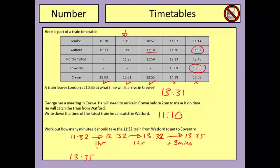So in total I've added on two hours and three minutes. Now I need to show this in terms of minutes rather than hours and minutes. One hour is 60 minutes, another hour is 60 minutes, and then I've got my three minutes. Adding all those together gives the final answer of 123 minutes to get from Watford to Coventry.